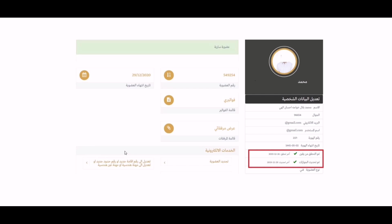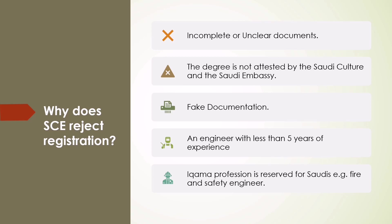Why does the Saudi Council of Engineers reject registration? If you receive an email stating that your registration is rejected, you should not panic. The registration application can be rejected for the following reasons: 1. Incomplete or unclear documents. 2. The degree is not attested by the Saudi culture attaché and the Saudi Embassy. 3. An engineer with less than 5 years of experience. 4. Ikama profession is reserved for Saudis, for example fire and safety engineer. 5. Fake documentation. You should call their helpline at 920-20820 and the phone officer will guide you. Most of the time, registration is rejected due to unclear documents — if you send clear documents, they will approve it.